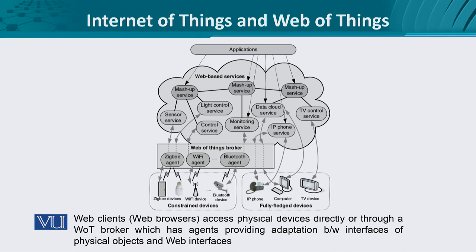To consolidate, here we have the conceptual view of IoT and WoT. We have web-based services: web service as such, web of IoT service, and mashup service. In this diagram, at the physical layer we have constrained devices and full-fledged devices. These devices expose their hardware interfaces for configuration, data access, data manipulation, and data read and write.